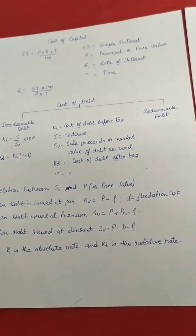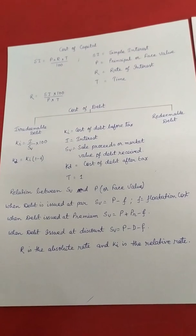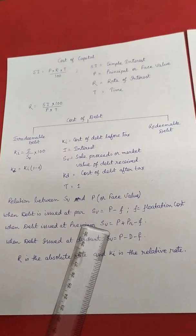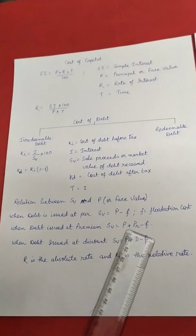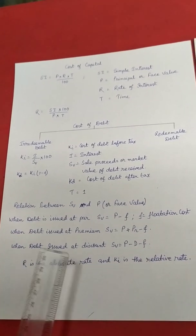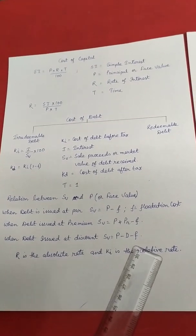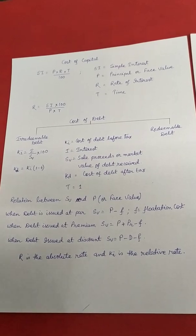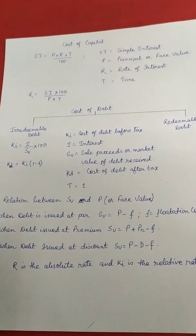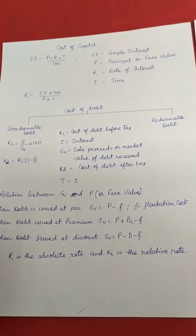When debt is issued at par, market value of debt equals face value minus flotation cost (F). When debt is issued at a premium, market value equals face value plus premium minus flotation cost. When debt is issued at a discount, market value equals face value minus discount minus flotation cost. We can easily remember the formula of cost of irredeemable debt by applying the concept of computing R in simple interest.